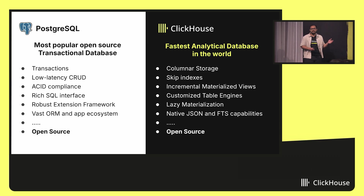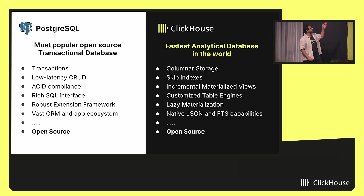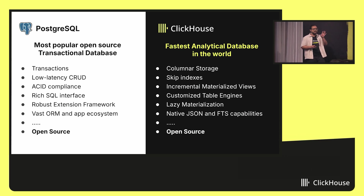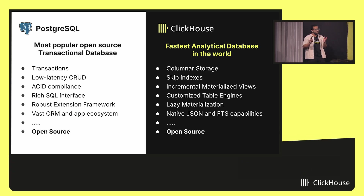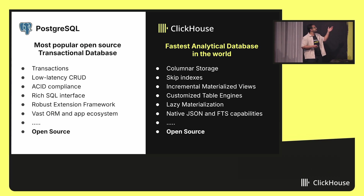ClickHouse, on the other hand, is the fastest analytical database on the planet. It has many purpose-built features like columnar storage, skip indexes, incremental materialized views, and customized table engines, which lets you power multiple use cases. Recently I came to know about the null table engine, which lets you do data manipulations without actually storing data using materialized views — which was kind of insane, and Postgres did not have that feature. It also has a lazy materialization feature, which helps with fast aggregations, and native JSON and full-text search capabilities, with hundreds of such optimizations laser-focused on blazing fast real-time analytics.